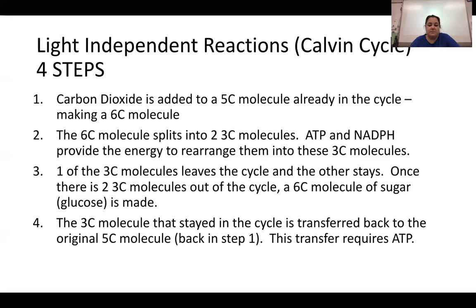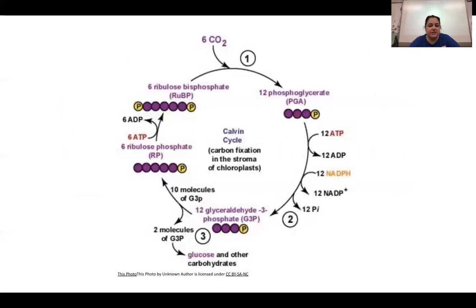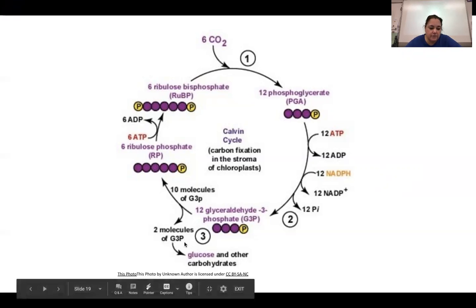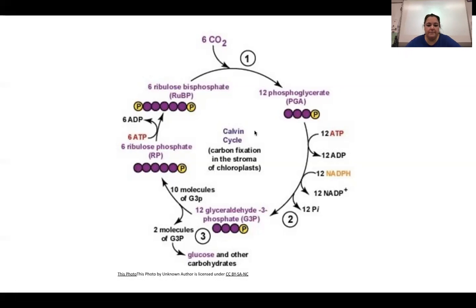Looking at the diagram: CO2 (1 carbon) enters and combines with a five-carbon molecule to give six carbons, which immediately splits into a three-carbon molecule. Using ATP and NADPH, the molecules are rearranged — one exits to eventually form glucose after two have accumulated, and the other is recycled back to continue the cycle. The Calvin cycle occurs in the stroma of the chloroplast.